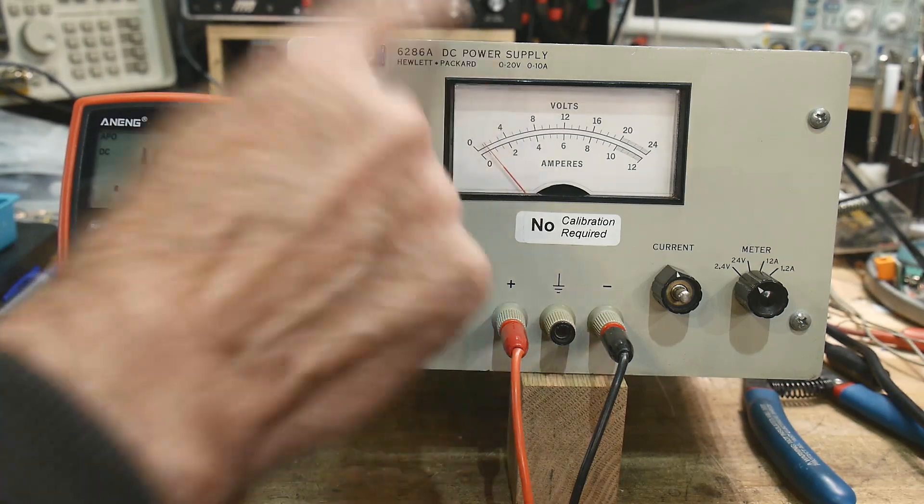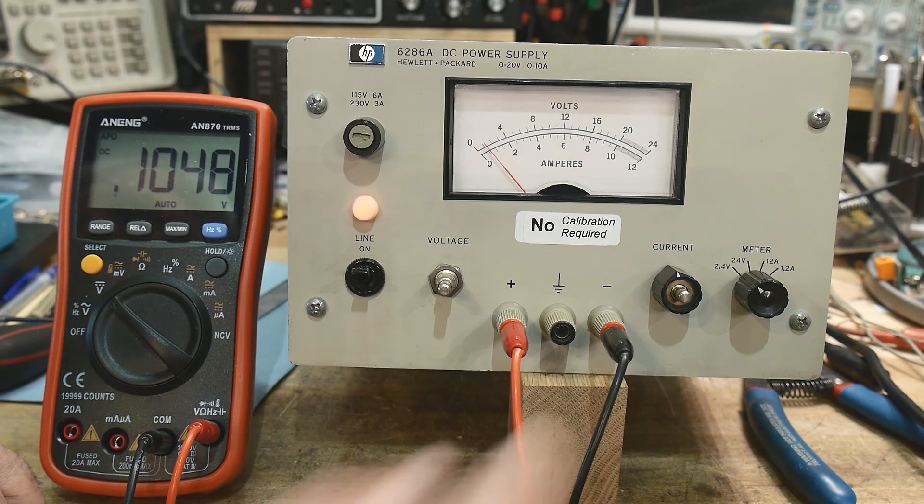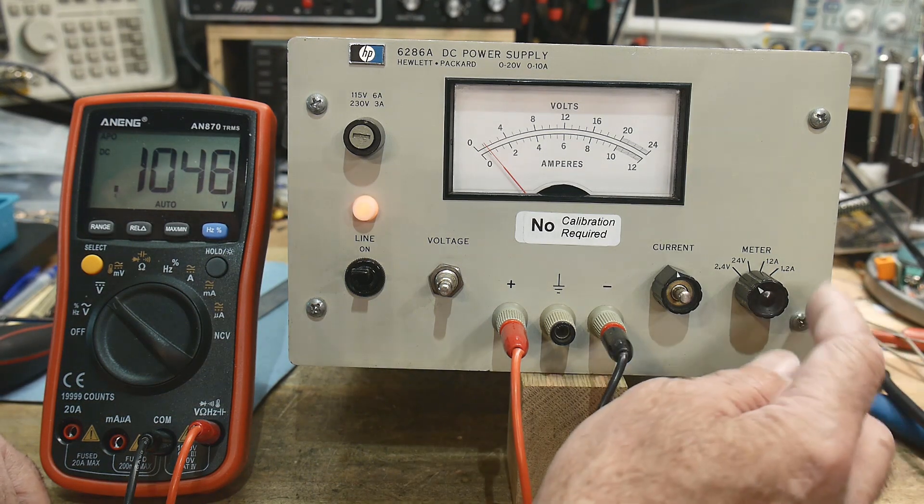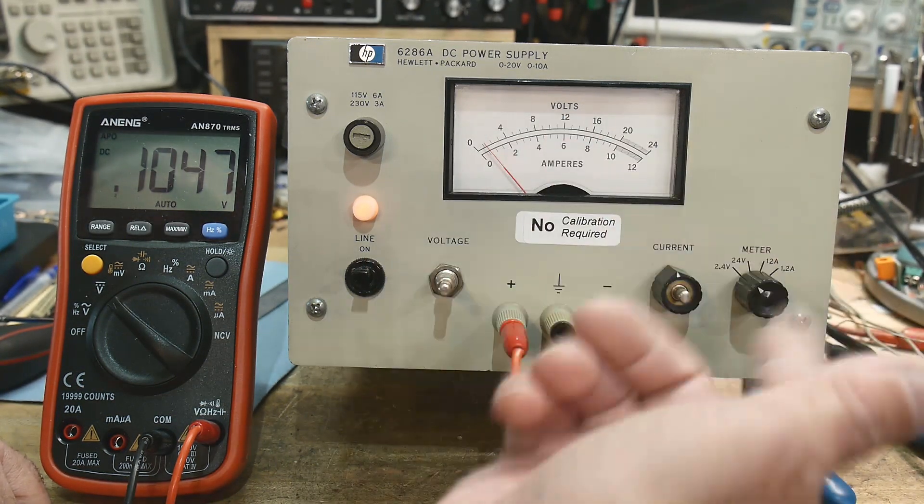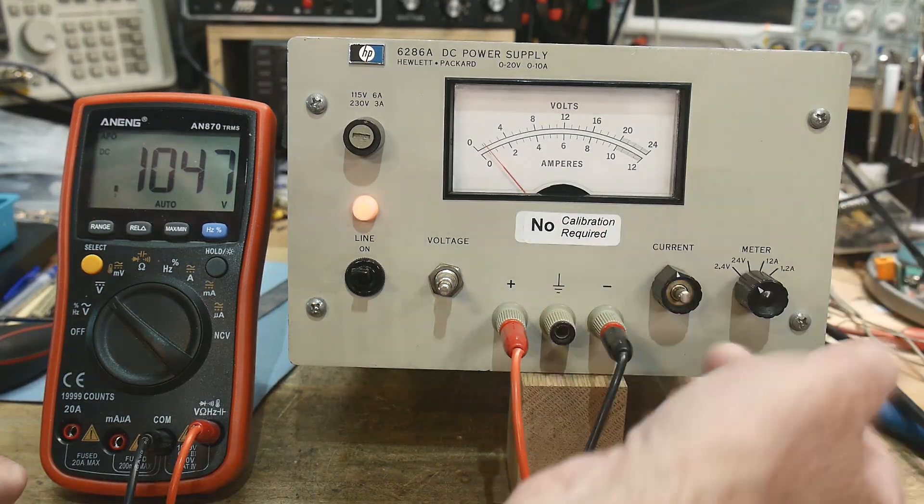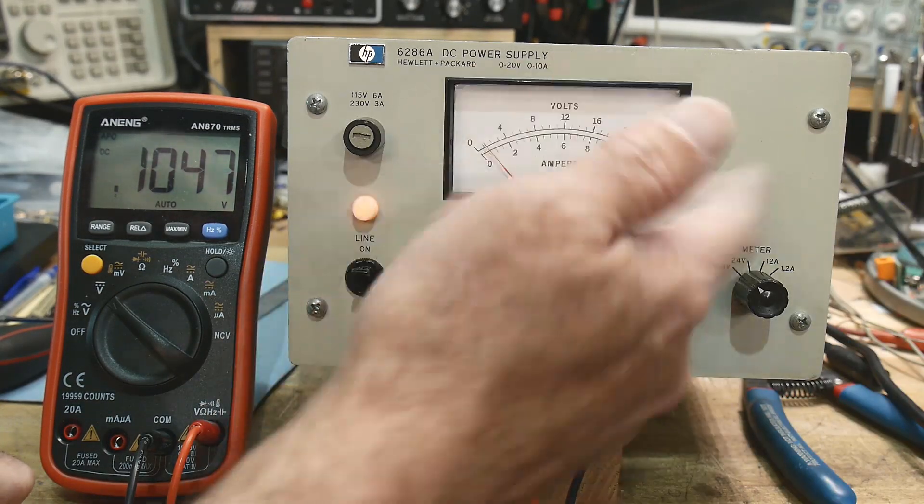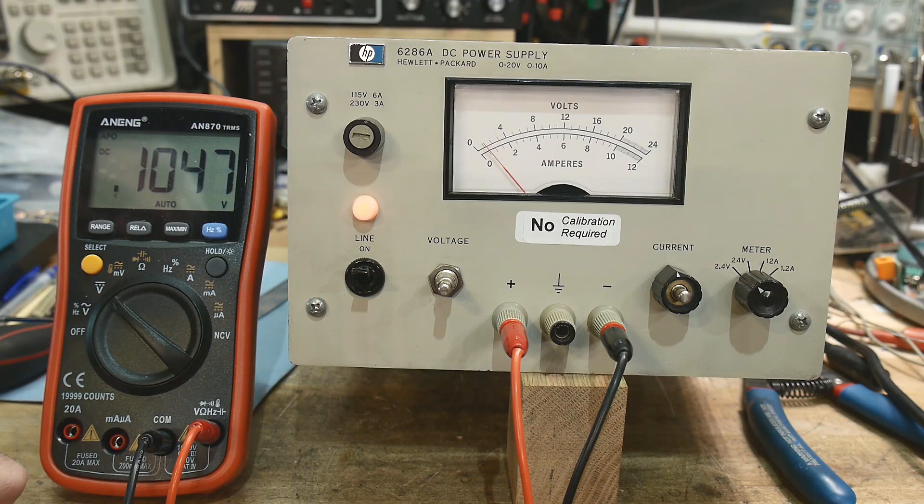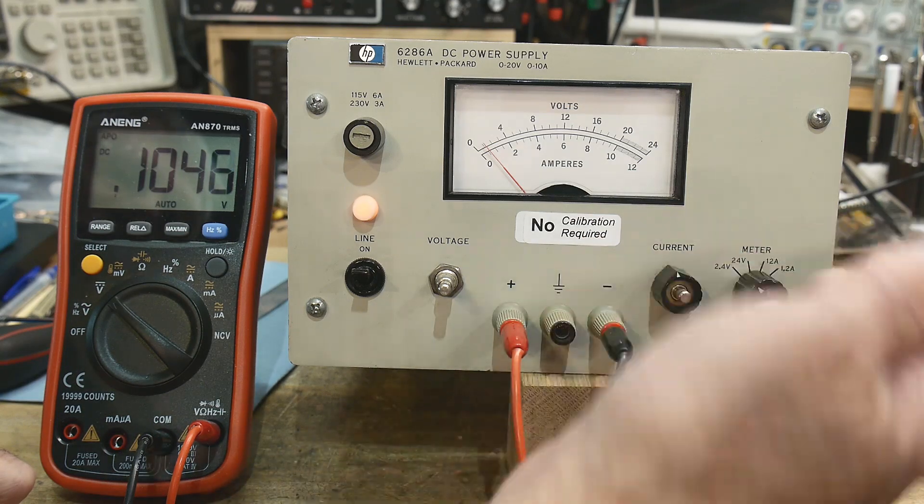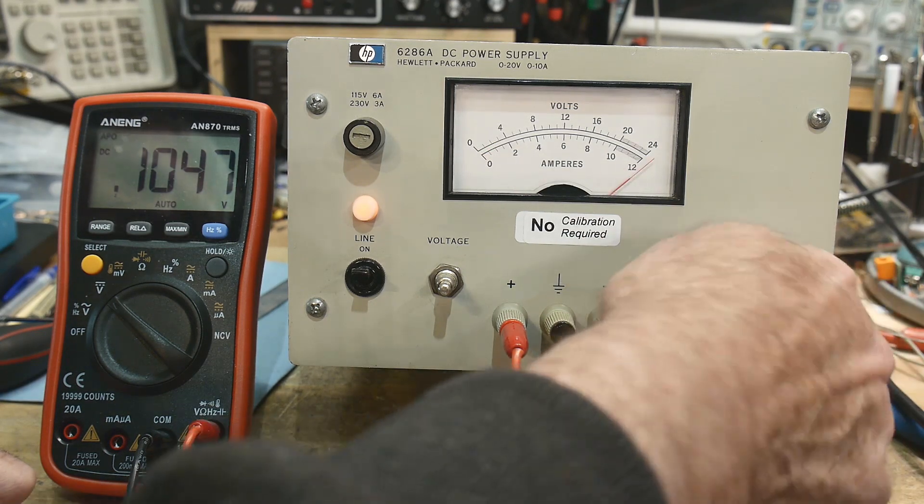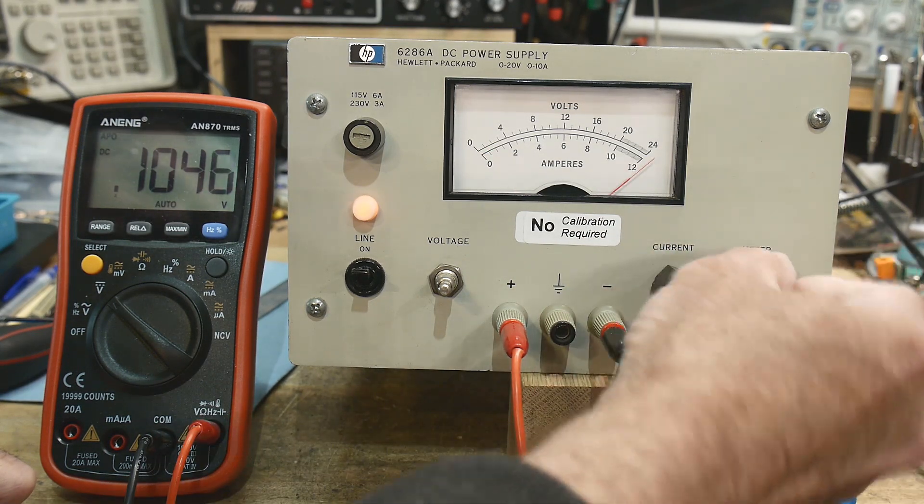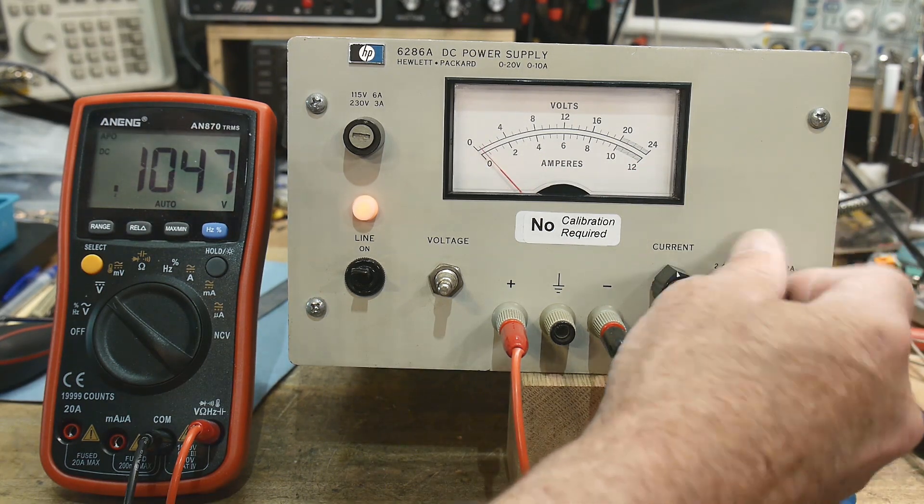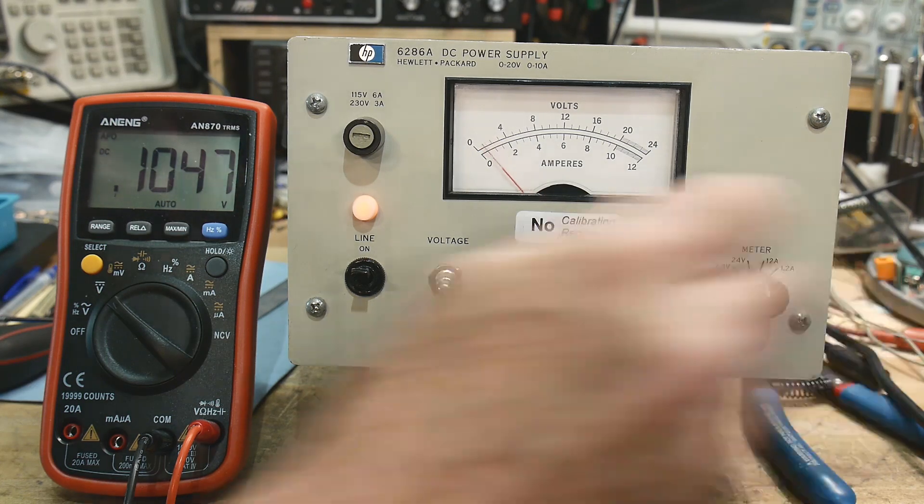It seems strange that you have a 10 amp power supply with a two and a half volt range. It also has a 1.2 amp range. The 1.2 amp would be very handy. The 1.2 amp is pegged, so there's something wrong with the meter circuit. I'm hoping the power supply is good.